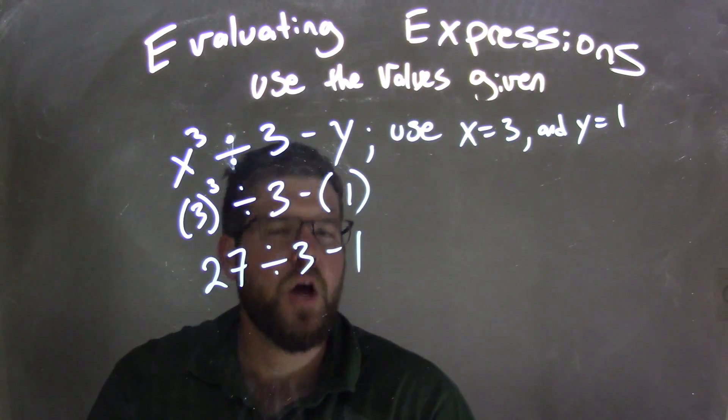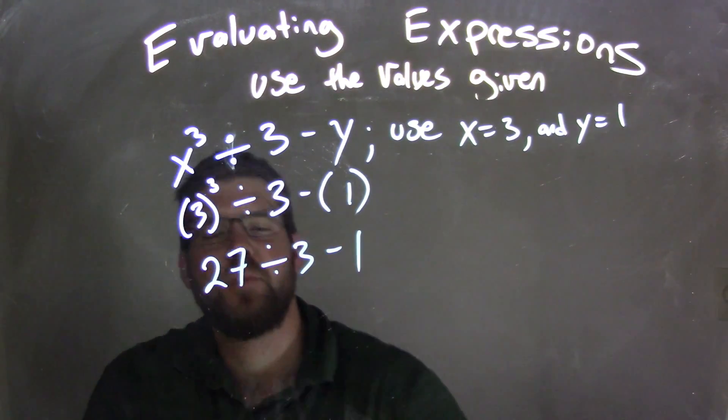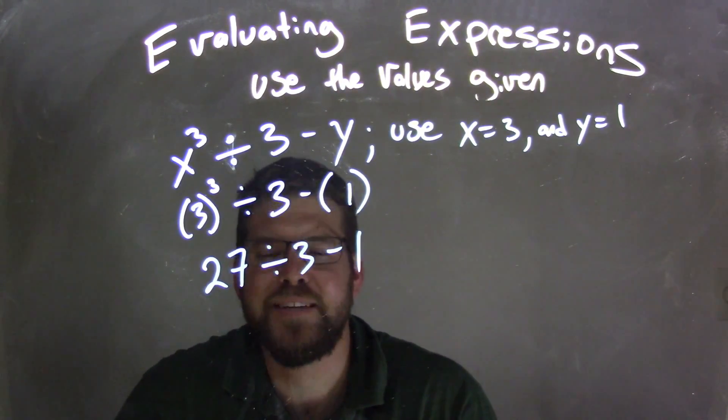Now, why do we do that step first? Well, exponents are our first step in the order of operations. So now we're left with division and subtraction. The highest step here is division.